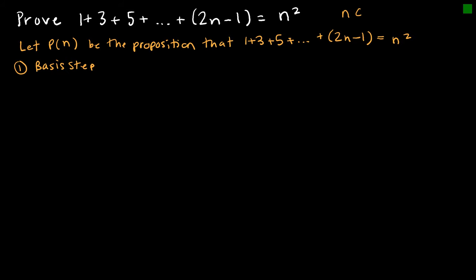Then I need to show my basis step. Since we're looking at positive integers, the lowest positive integer is 1, so I have to prove p of 1 is true. That would be 1 equals 1 squared. Is that true? Yes, 1 equals 1, therefore the basis step is proven.